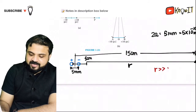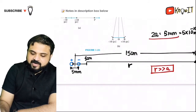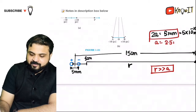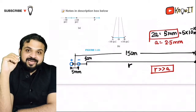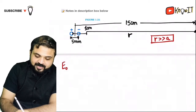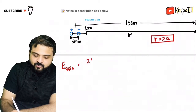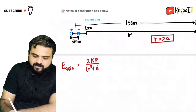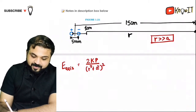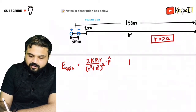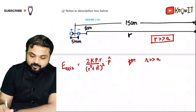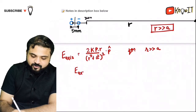When R is very much greater than a, in our study of the electric field of a dipole, we have seen a special case. The electric field at the axis of a dipole is given by E = 2kp / (r² + a²)², which simplifies to E_axis = 2kp / r³ in the direction of p when R >> a.